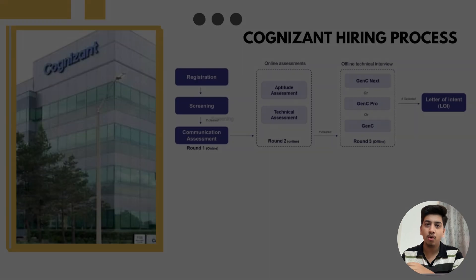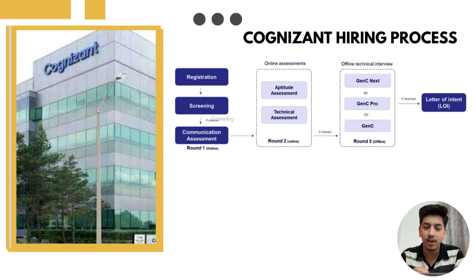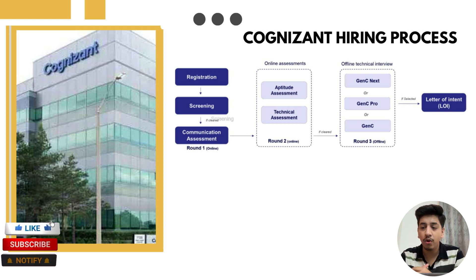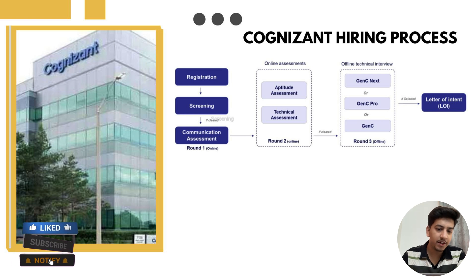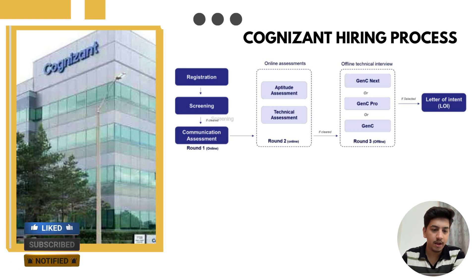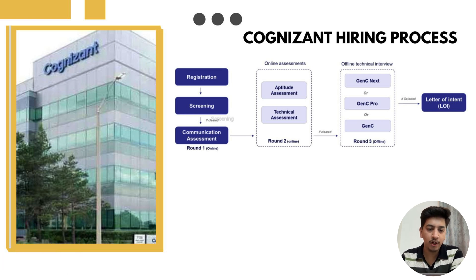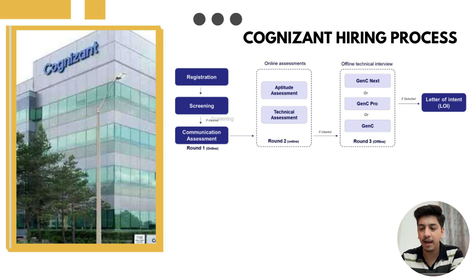The Cognizant Gen C hiring process via Superset includes several important steps. Here's a quick overview of this journey. Step one is registration on Superset — make sure to fill all the required details, upload your updated resume, and complete the application form before the deadline.